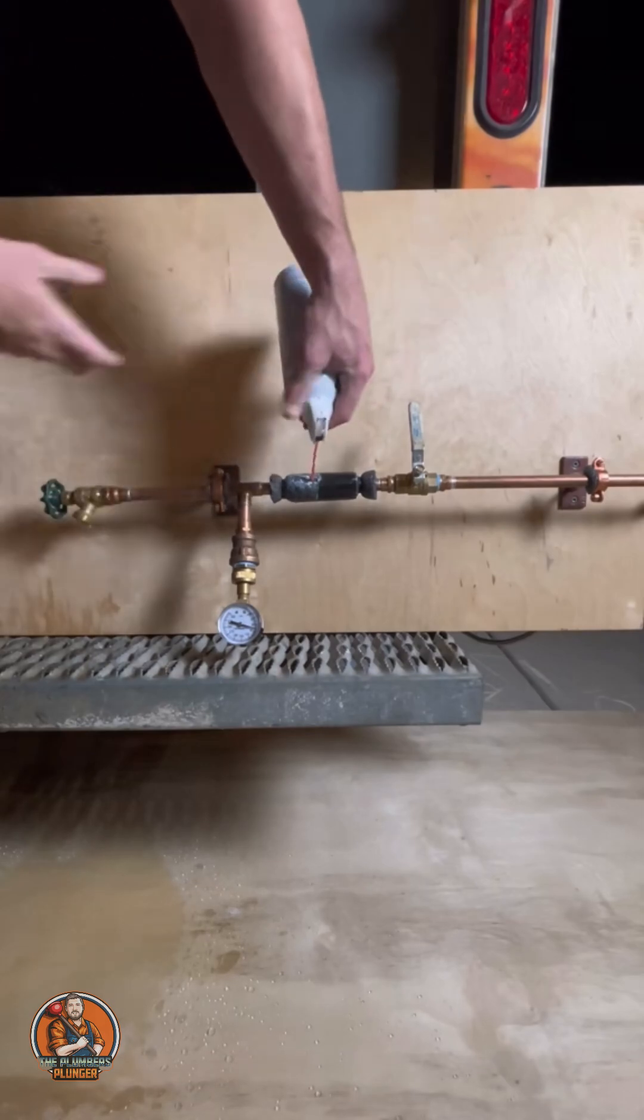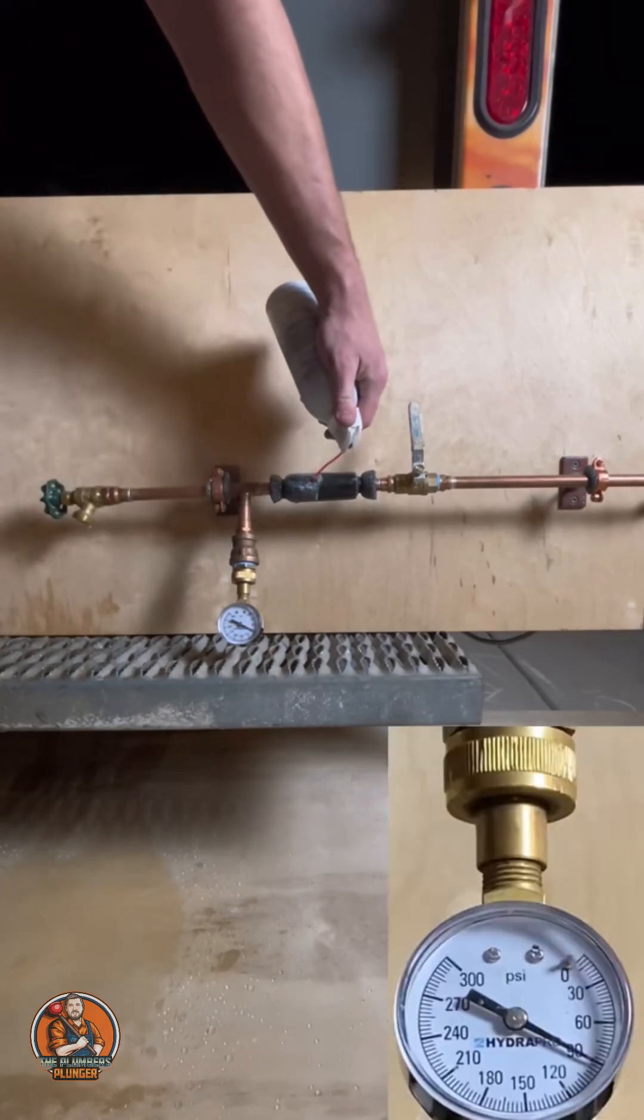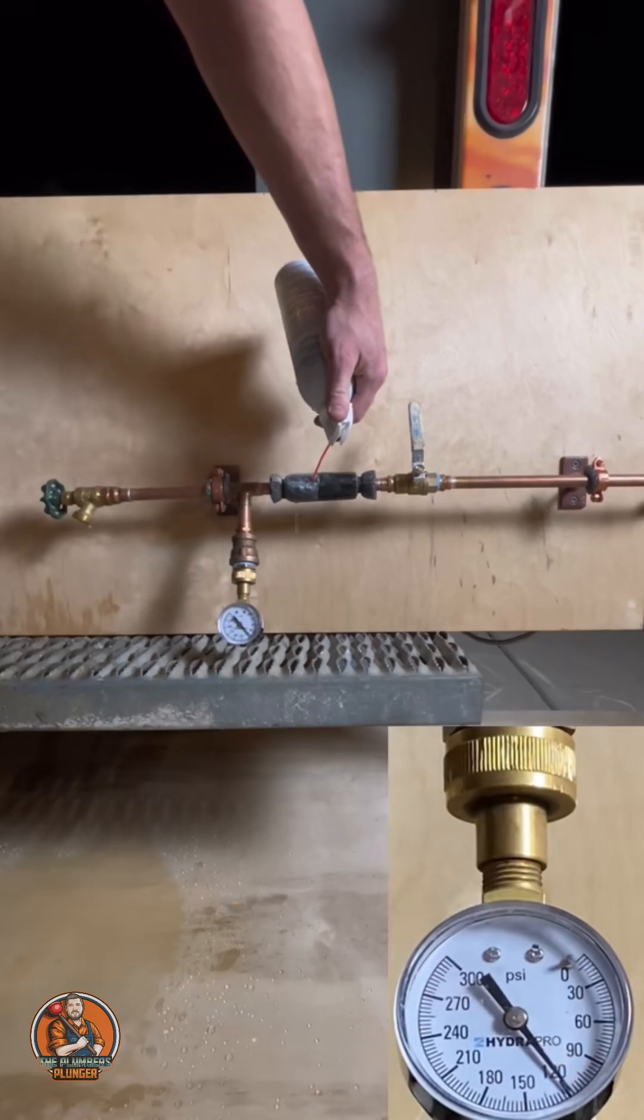So for this demonstration, we have a section of copper pipe that's starting at your standard water pressure of 60 psi. When the water starts to freeze inside this pipe, you can see how quickly the pressure begins to build up.